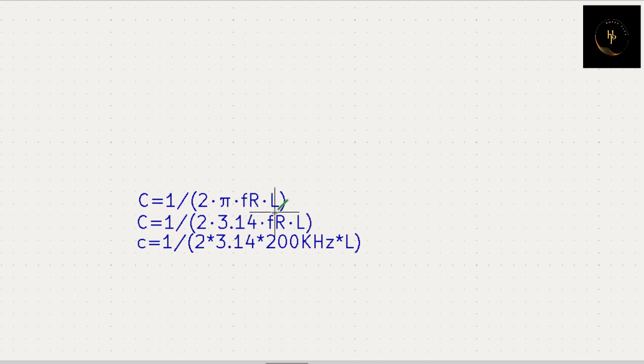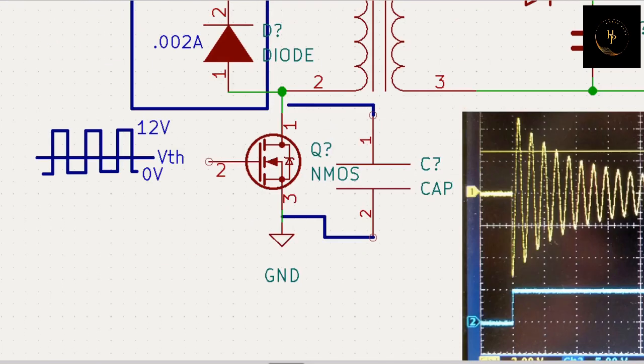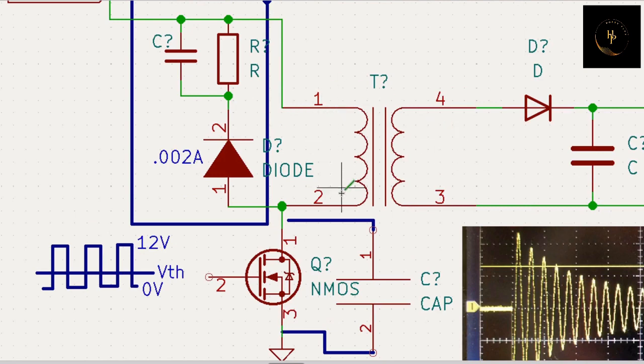C is equal to 1 divided by 2 times pi times RF times L. That is the ringing frequency and L. I made a video about this L. That is your primary coil inductance.